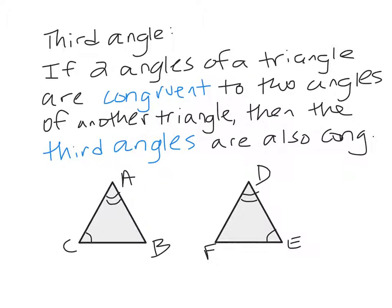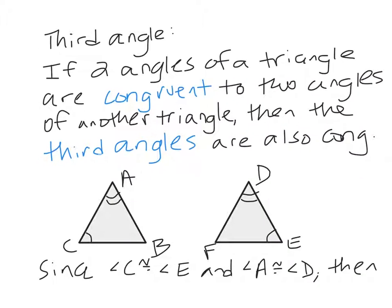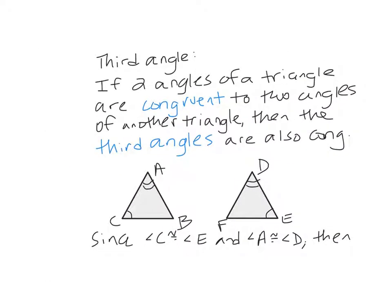The next thing we need to talk about is the third angle. So if I only know that two angles of a triangle are congruent to two angles of the other triangle, we can actually conclude that the third angles are also congruent. So in this figure I have angle C is congruent to angle E. So since angle C is congruent to angle E and angle A is congruent to angle D, then we know that angle B is going to be congruent to angle F.